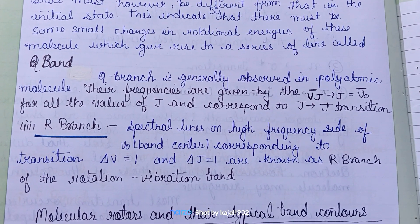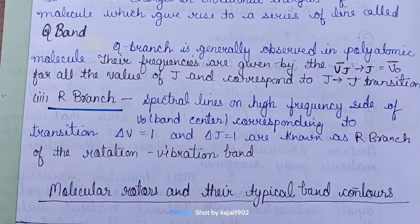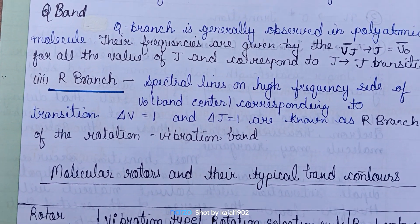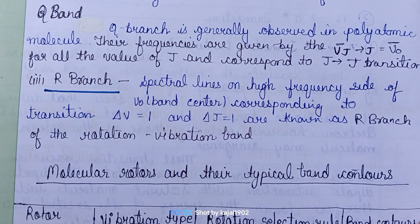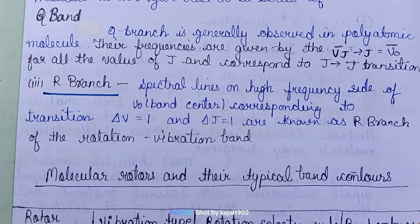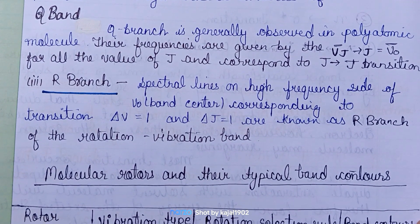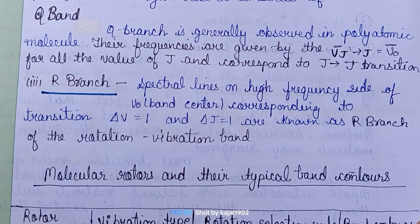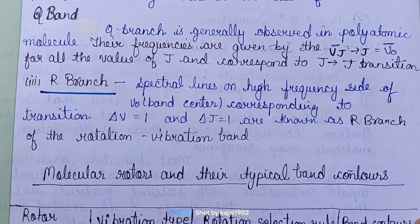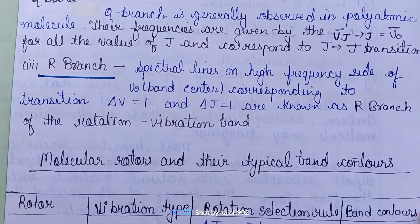The Q branch is generally observed in polyatomic molecules, and these frequencies may be given corresponding to J→J transitions. The R branch consists of spectral lines on the higher frequency side, corresponding to the transition Δv = 1 and ΔJ = +1, and is known as the R branch of the rotational-vibrational band.